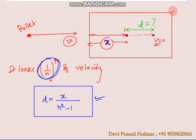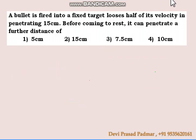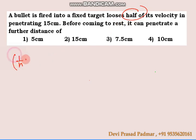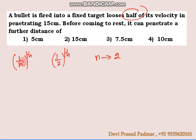Let us solve one problem based on this formula. It is given that a bullet is fired into a fixed target and loses half of its velocity. Half of its velocity means 1/2, so as we said the general form is 1/n, which here means n = 2. It penetrates through 15 centimeters, so x = 15 cm.